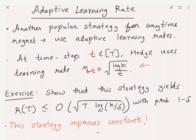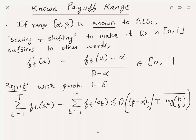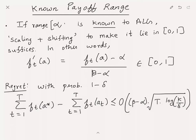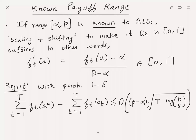Now let's look at the second part — again using the doubling trick. What if the payoff ranges are different from [0,1]? First consider the known payoff range: suppose the payoff range is some known [alpha, beta], not [0,1].